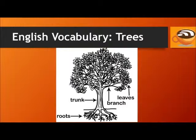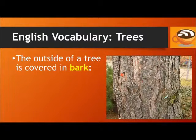The roots are underground. They provide the support system for the tree. The main body of the tree is called the trunk. The trunk then divides into branches, and the leaves, of course, grow from the branches. The outside of a tree is covered in bark.